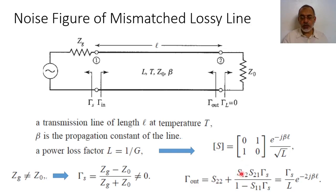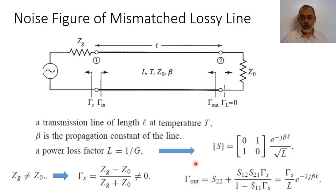S12 multiplied by S21 equals (1/L) · e^(−2jβL). Since S11 is zero, the magnitude of γ_output simplifies, and basically the reflection coefficient at the output port is γ_output = (γs / L) · e^(−j2βL). So we now have γs, γ_output, and the S-parameters of the two-port network, from which we can obtain the available gain.